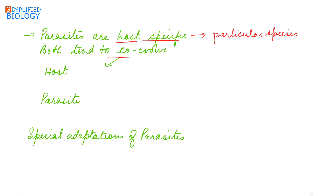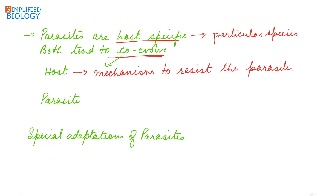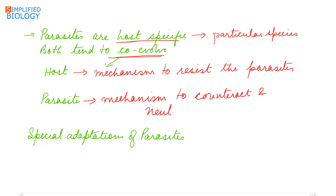Parasites are host-specific, meaning they can grow only on particular species. The parasites and the host tend to co-evolve. The host tries to develop mechanisms to resist or prevent the growth of parasites, while the parasites develop mechanisms to counteract and neutralize those defenses so that they can successfully live within the host.